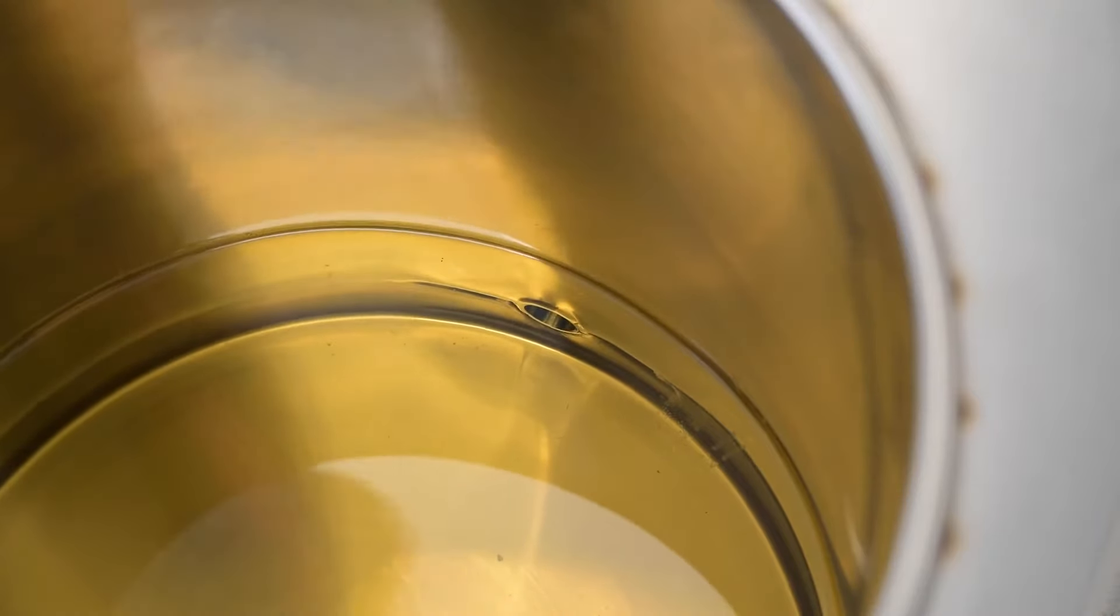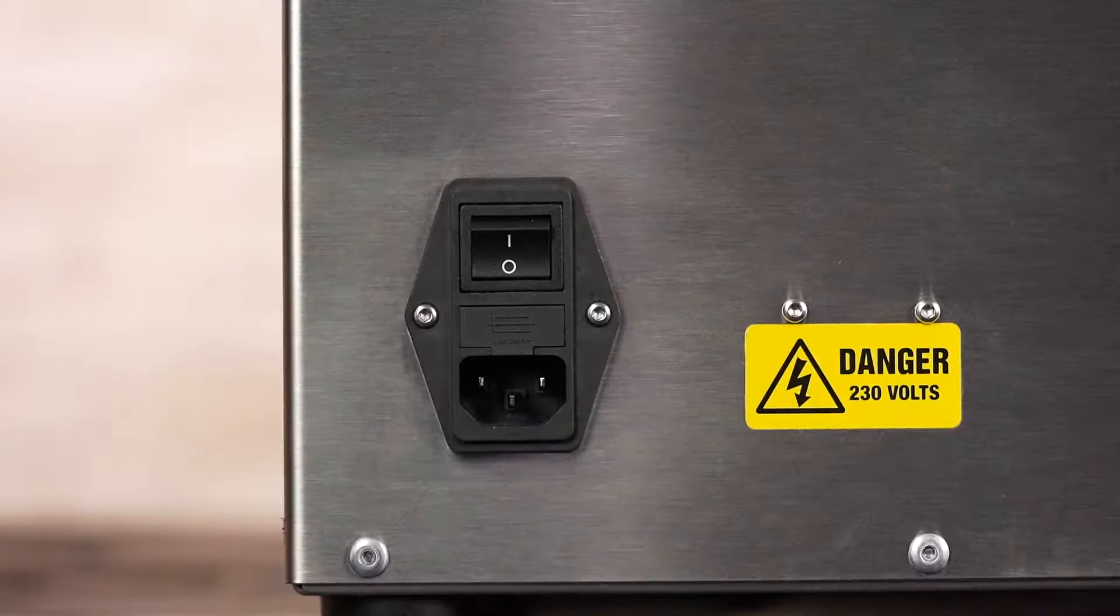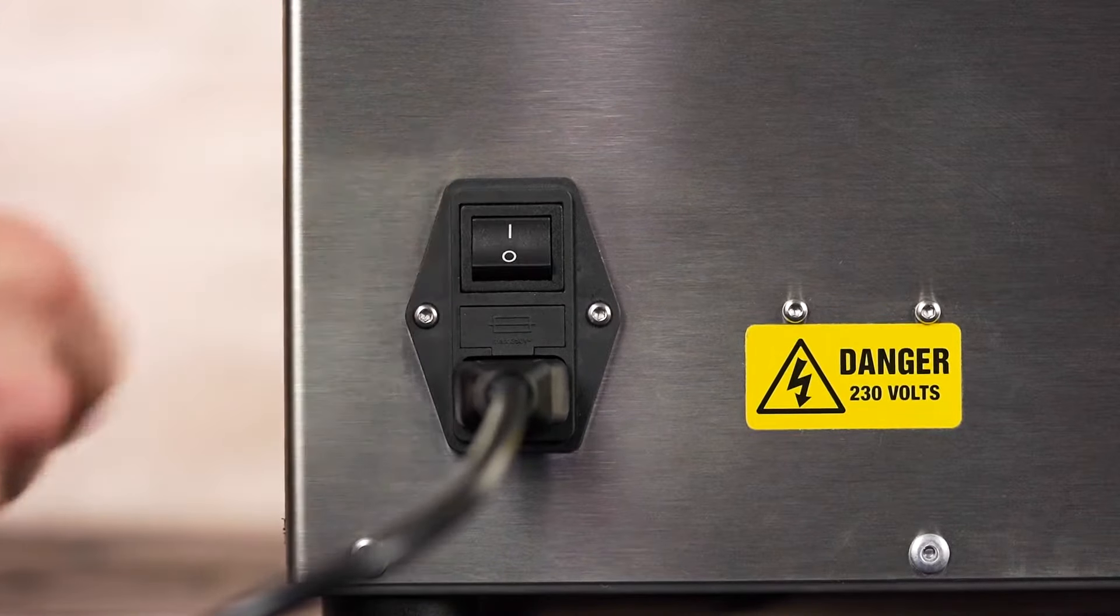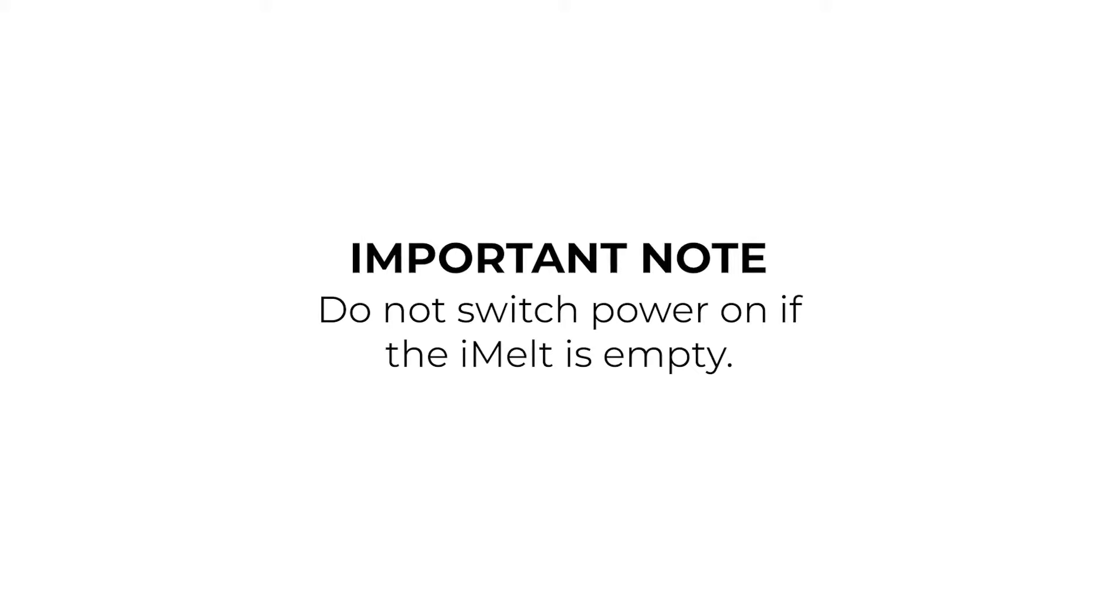With the desired contents added to the iMelt, place the lid over the tank and connect the power cable to the back of the unit. Turn on the power using the switch located just above the power inlet. Don't switch on the power if the iMelt is empty, as this can cause permanent damage.